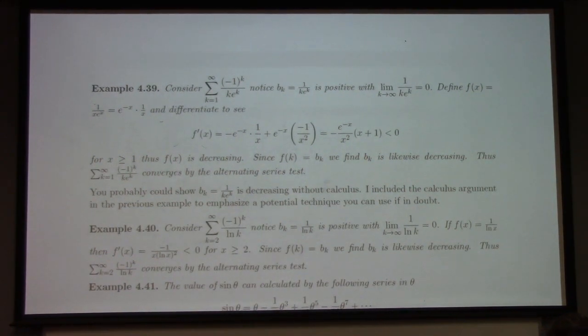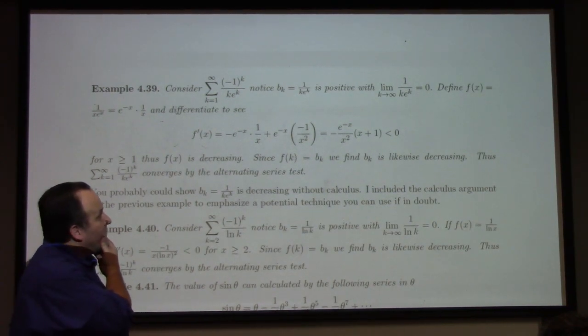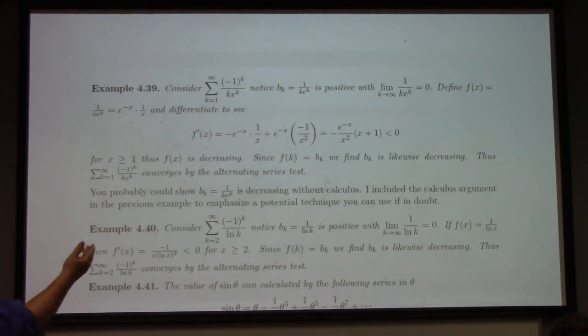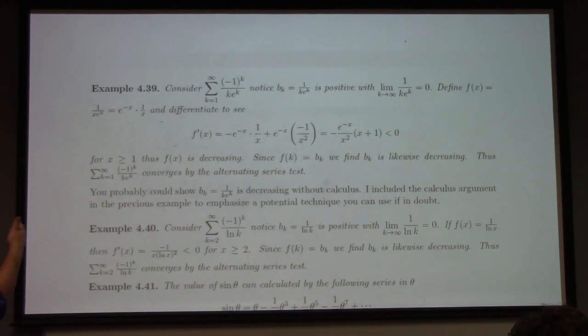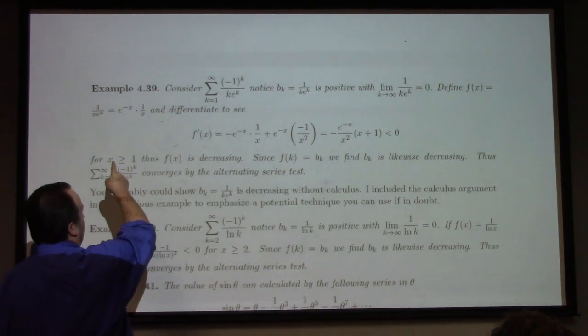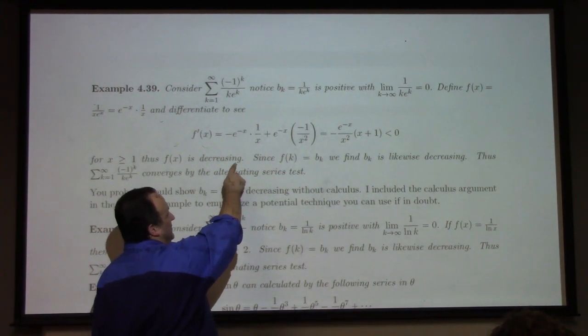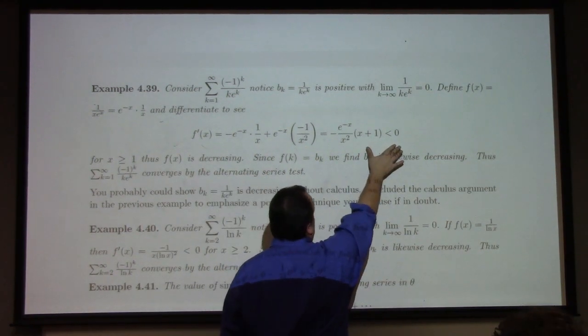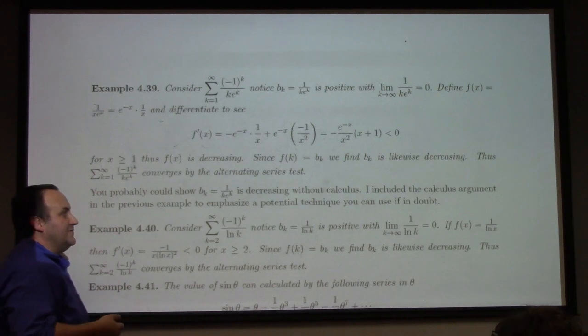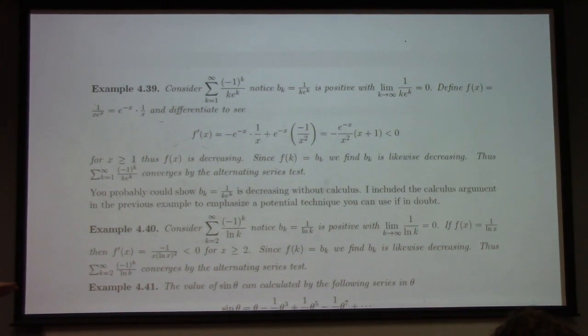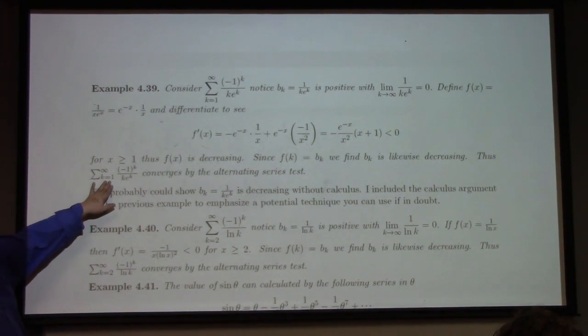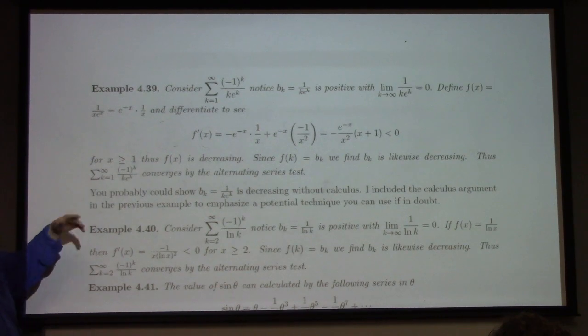Here's an example. Suppose you've got minus 1 to the k over k times e to the k. So we've got a positive term. It limits 0. I would say it's almost unnecessary what I'm doing, but I'm just trying to make sure it's really decreasing, right? And to see that this is a decreasing function, easiest thing for me, differentiate it. I get this. That's clearly negative. Therefore, for sure, that is a decreasing function of k. So I've satisfied the terms and conditions of the alternating series test, and I get that the sum k equals 1 to infinity of minus 1 to the k over k e to the k converges by the alternating series test.